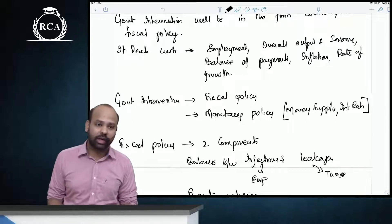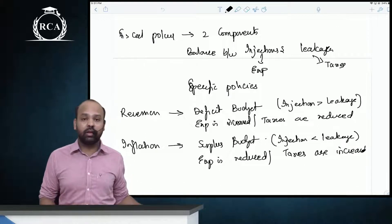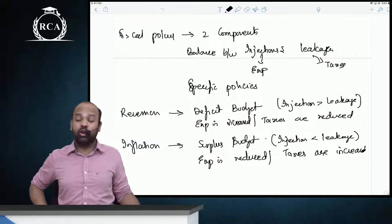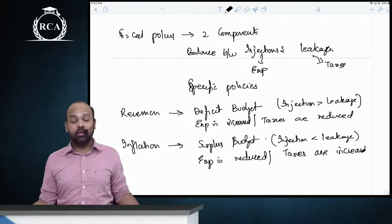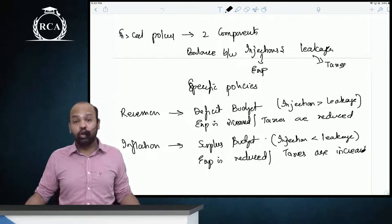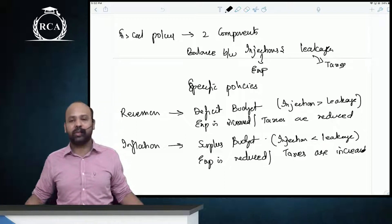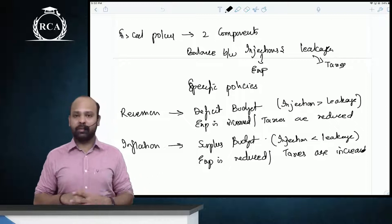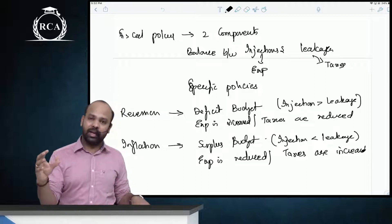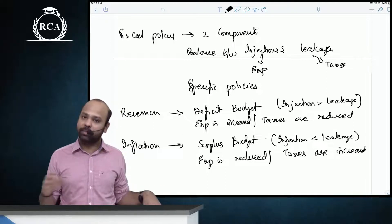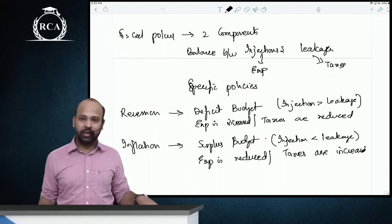Stabilization function deals with employment levels, price stability, balance of payments, and national output and income. In case of recession, the government should have a deficit budget — more injections than leakages — by reducing taxes, increasing spending, or both. In case of inflation, the government should have a surplus budget — more leakages, less injections — by increasing taxes, reducing spending, or both. Remember the main crux of all three fiscal functions: allocation, redistribution, and stabilization.